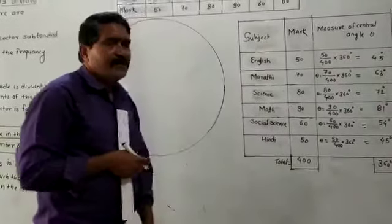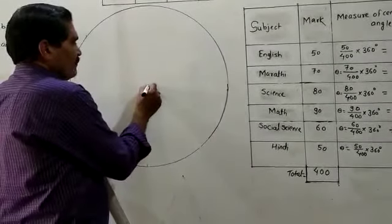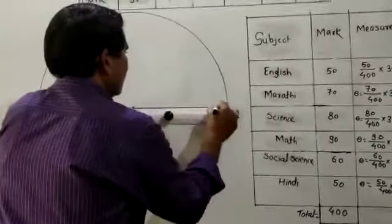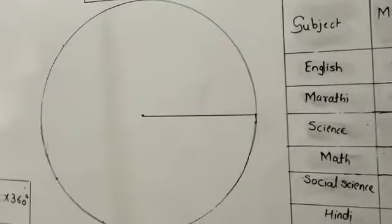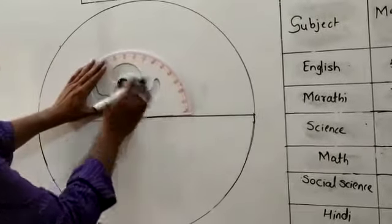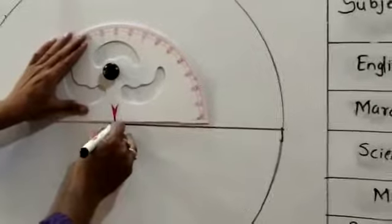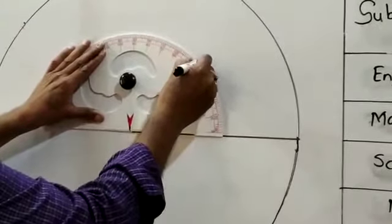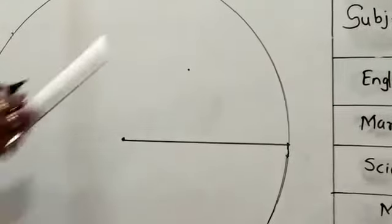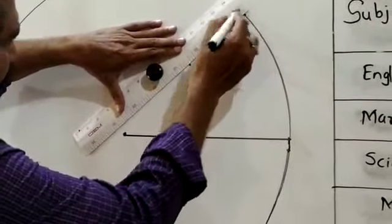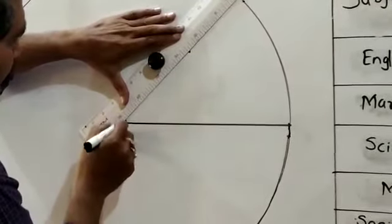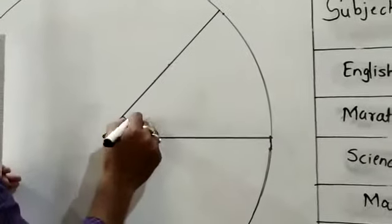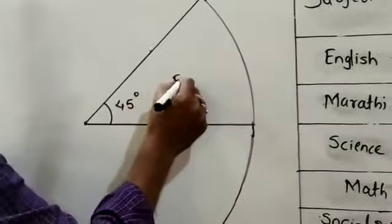From that, you have to draw the pie chart. Draw a circle, and from the center draw one radius. Then, taking the protractor, mark 45 degrees and draw a radius through that point. This sector of 45 degrees is the central angle of English.